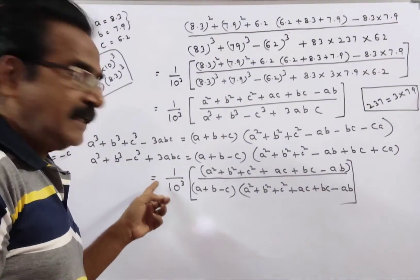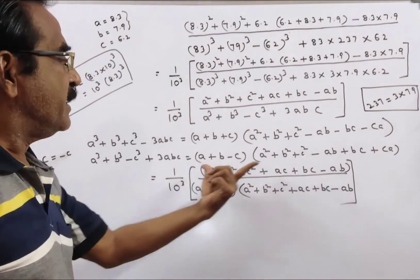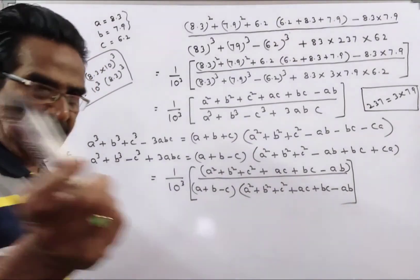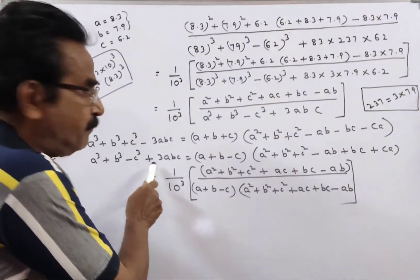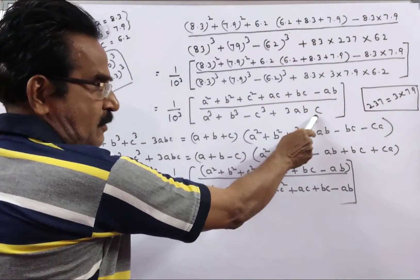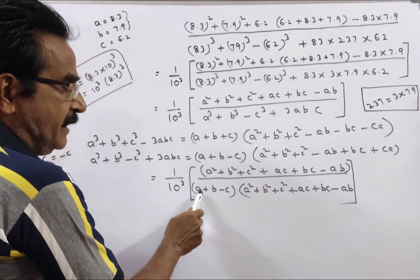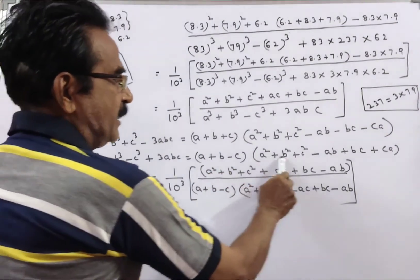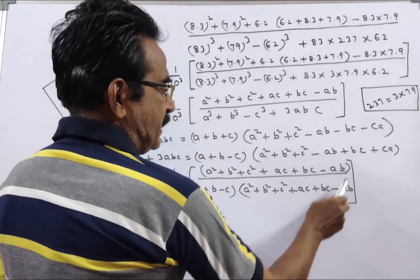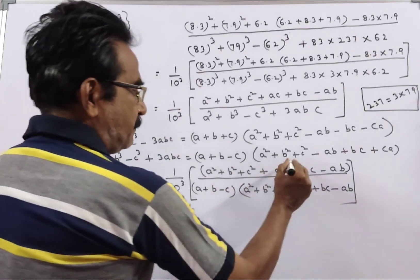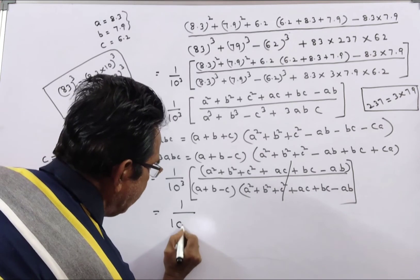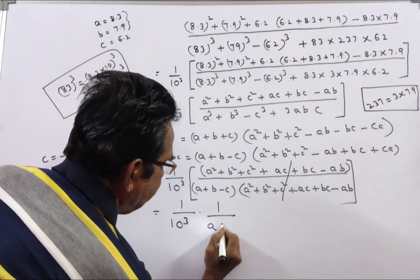So then this is equal to 1 by 10 cube into the numerator as it is. In place of the denominator, A cube plus B cube minus C cube plus 3ABC can be substituted as A plus B minus C, into A squared plus B squared plus C squared plus AC plus BC minus AB. These two expressions get cancelled and the remaining thing is 1 by 10 cube into 1 by A plus B minus C.